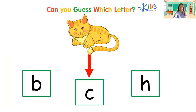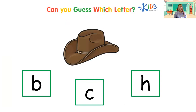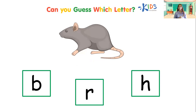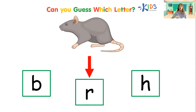Let's proceed to the next picture. What is the beginning letter of the picture? Is it B, K, or Ha? Let's proceed to the next picture. What is the beginning sound of the picture? Is it B, K, or Ha? The answer is K. Ra, ra, ra. Very good.